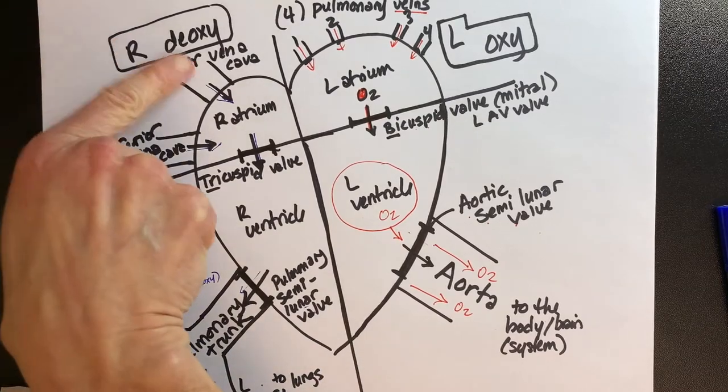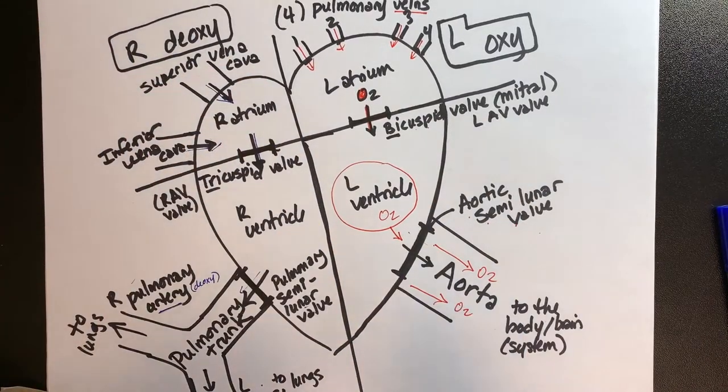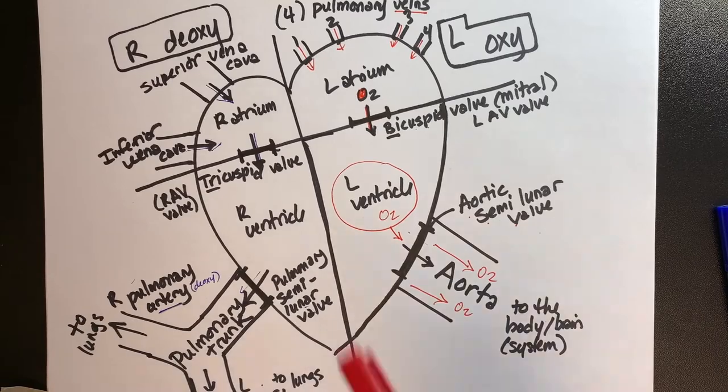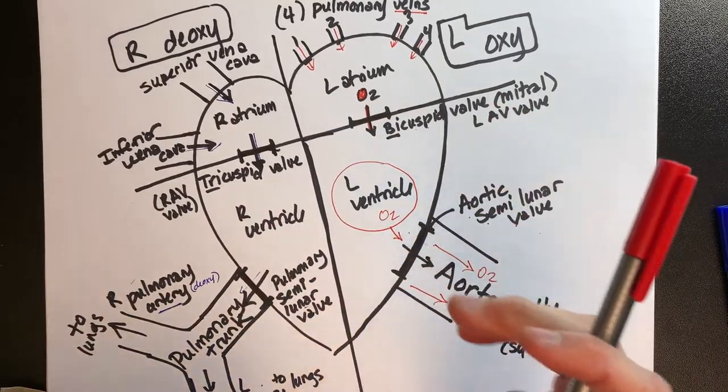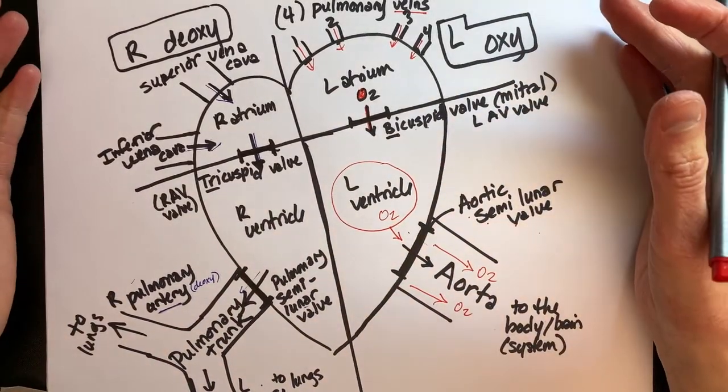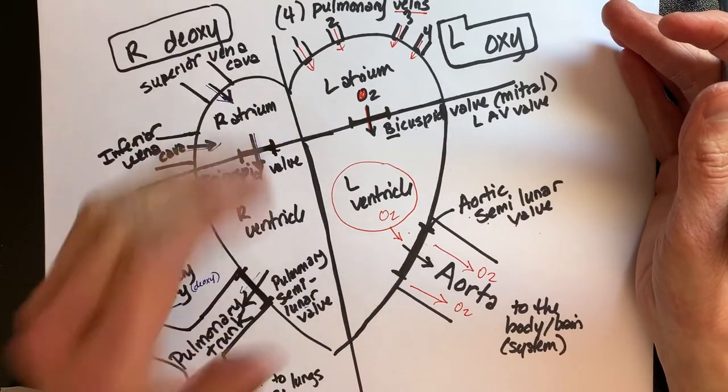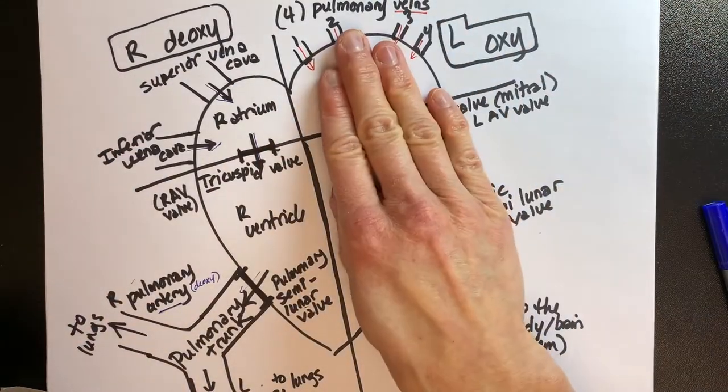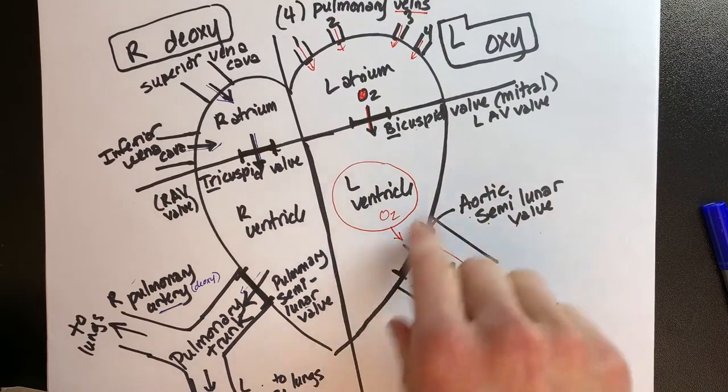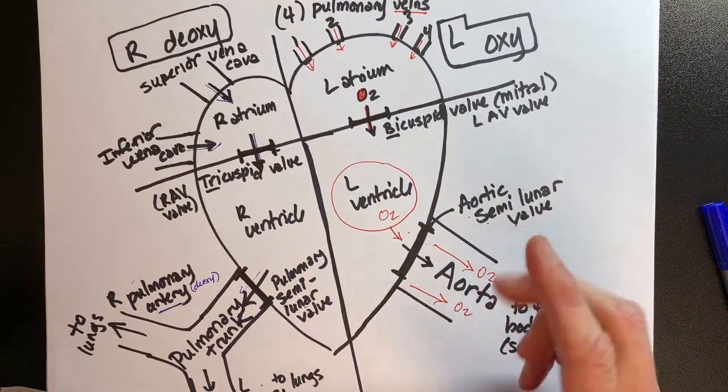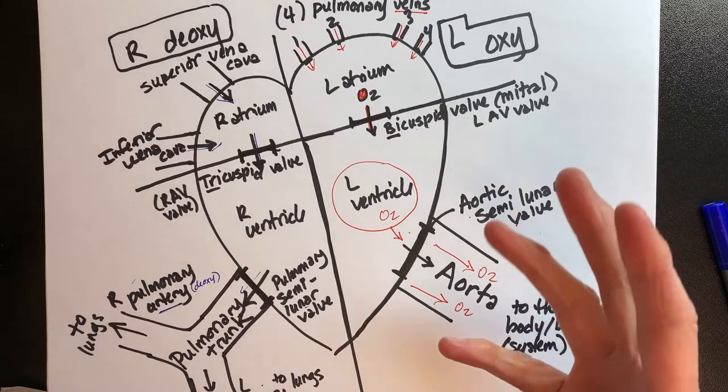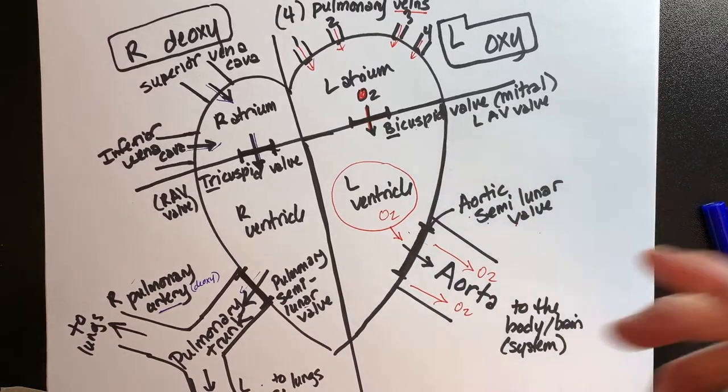The deoxygenated blood will come back through the superior and inferior vena cava and we'll go through it again. The connection between these two sides—if you're thinking about these two sides as a duplex—the right side has deoxygenated blood, the left side has oxygenated blood. They are only allowed to communicate through the lungs.